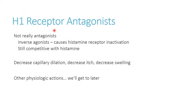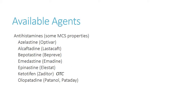We're going to utilize H1 receptor antagonists. The ocular meds are a very different list than what we saw with ENT drugs. They work on histamine that's already been released from mast cells, so for an acute inflammatory reaction, these are very useful. The main ones you'll see include azelastine, alcaftadine, bepotastine, and olopatadine. Ketotifen is important because it's available over the counter — patients can get Zaditor from pharmacies for self-treatment.